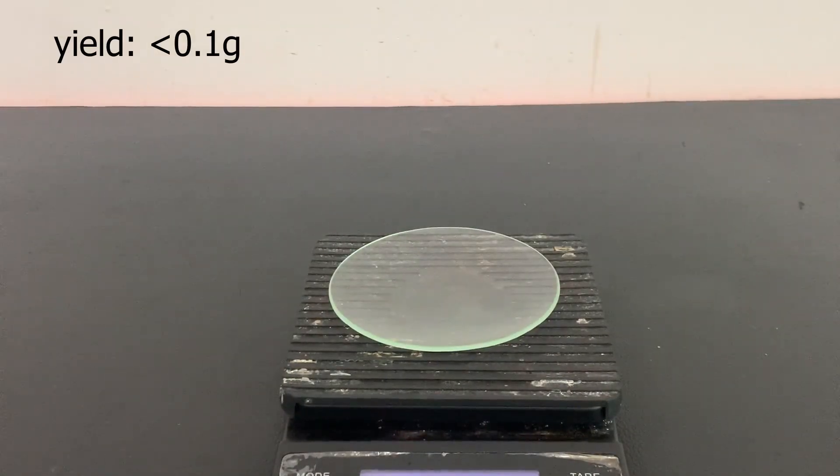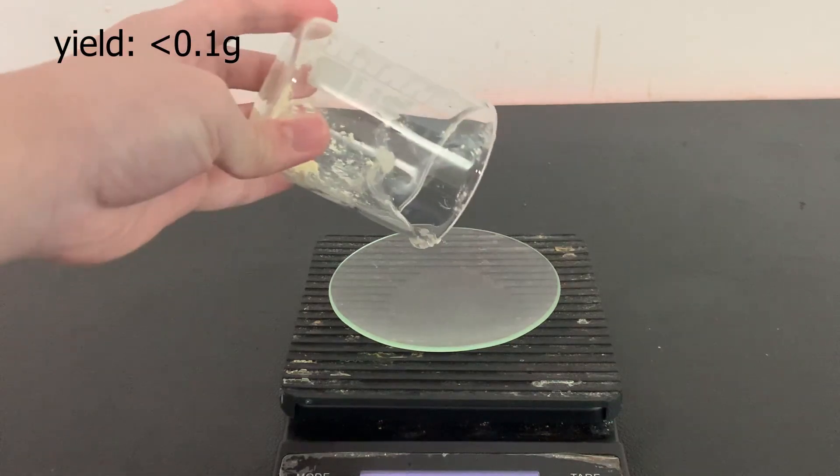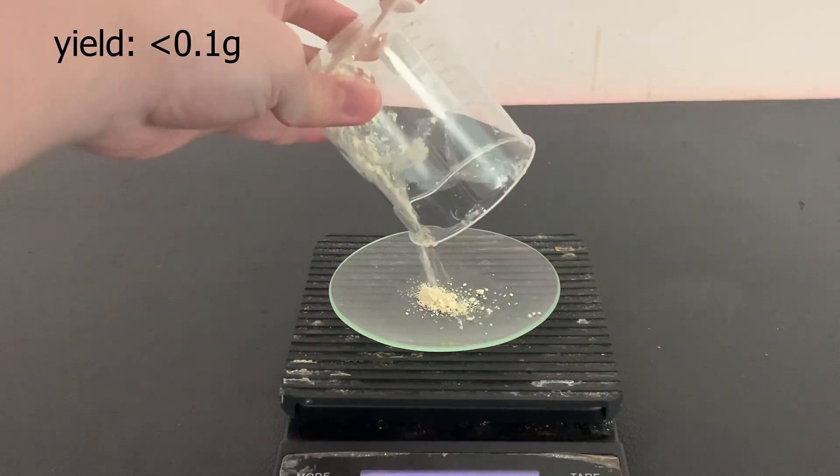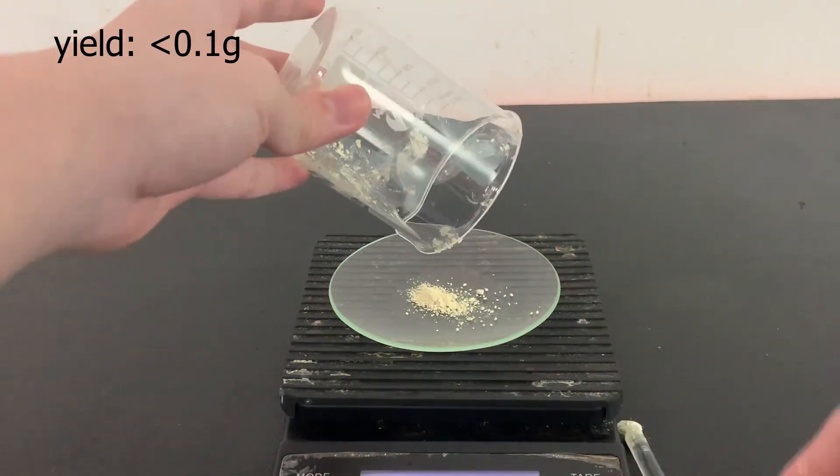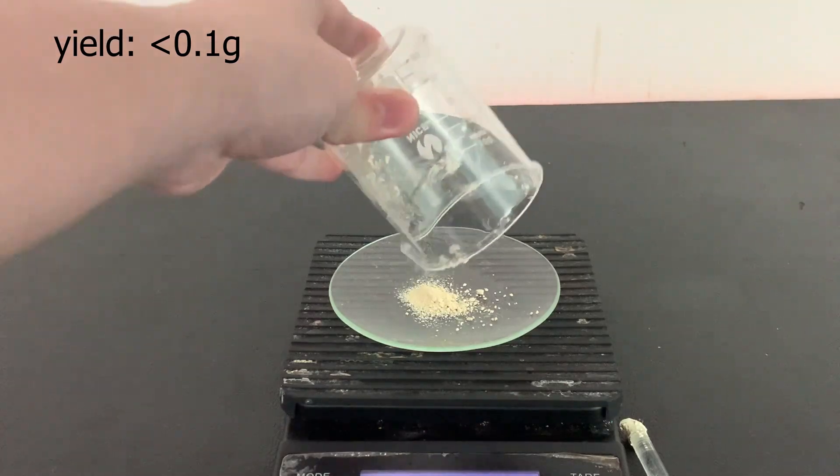I then measured the yield of the luminol I was able to produce. It came to be lower than 0.1 grams as my scale wasn't able to read it. The low yield probably came from me not refluxing the reaction long enough.